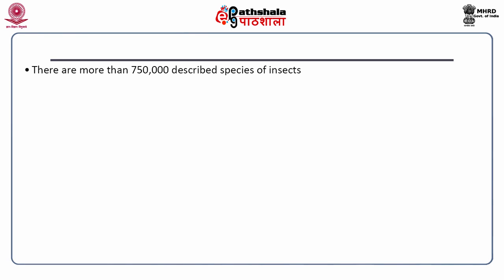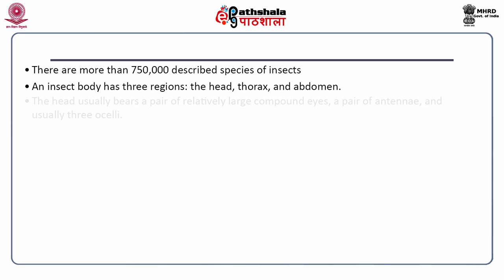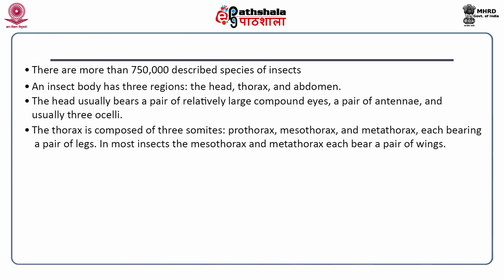There are more than 750,000 described species of insects. An insect body has three regions: the head, thorax and abdomen. The head usually bears a pair of relatively large compound eyes, a pair of antennae and usually three ocelli. The thorax is composed of three somites — prothorax, mesothorax and metathorax — each bearing a pair of legs. In most insects, the mesothorax and metathorax each bear a pair of wings.